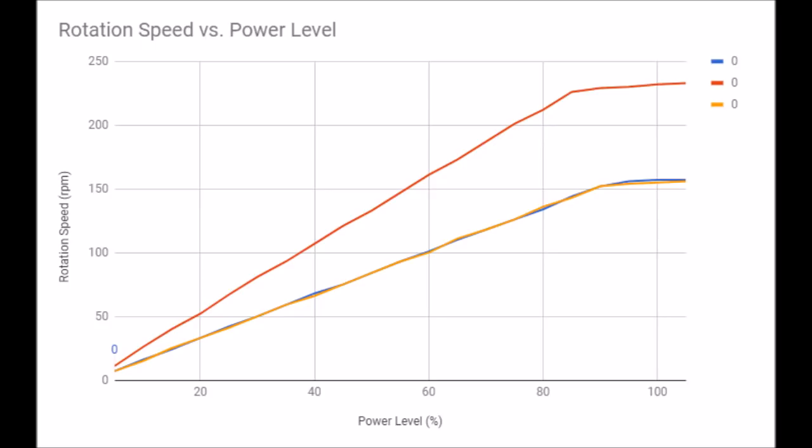Now the medium motor had the highest maximum speed of 236 RPM. The NXT motor had a maximum speed of 156 RPM, and the EV3 large motor had a very similar maximum of 158 RPM.